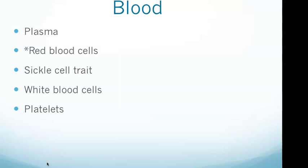Sickle cell trait involves red blood cells that are irregularly shaped. White blood cells are part of the body's immune response and remove pathogens from the blood. Lymphocytes, a type of white blood cell, release antibodies in response to disease. Platelets prevent bleeding by developing blood clots, working with coagulating proteins to stick to vessel walls and to each other.